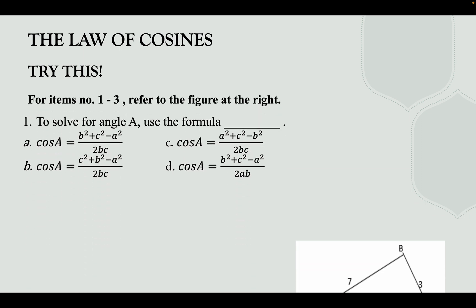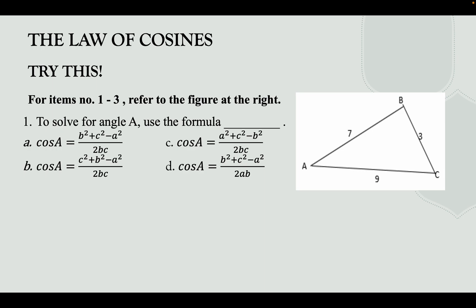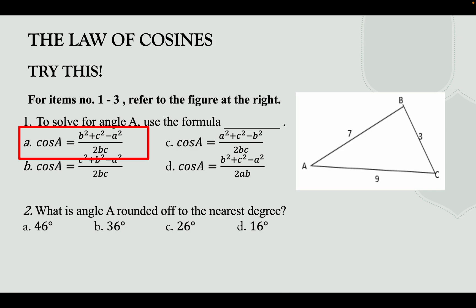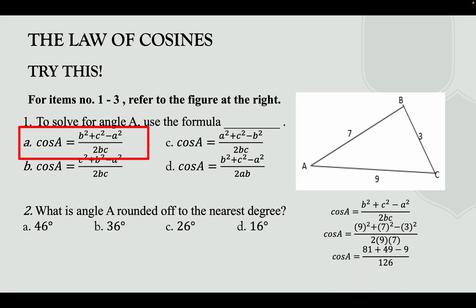Now try this practice problem. For items one to three, refer to the figure at the right. Pause and try the questions yourself. Item one: solve for angle A. Using cos A = (b² + c² − a²) / (2bc), substitute the given values and apply cos inverse: cos inverse of (81 + 49 − 9) / 126, giving angle A ≈ 16.19°, or 16° to the nearest degree.